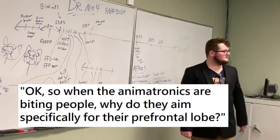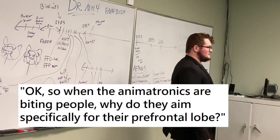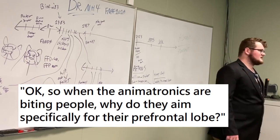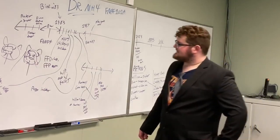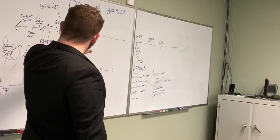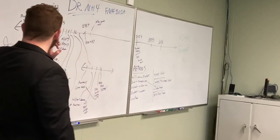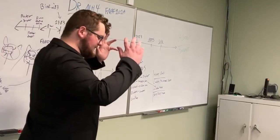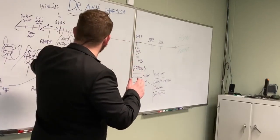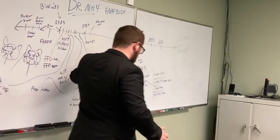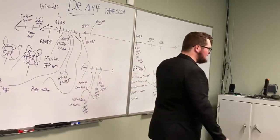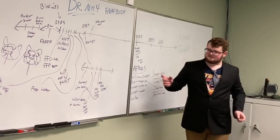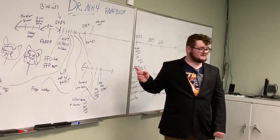Any questions? Okay, so when the animatronics are biting people, why do they aim specifically for their frontal lobe? Okay. I think that's specifically the two bite incidents. Bite of 83 was because Evan's head was specifically put in Fredbear's mouth. Bite of 87, I'm not 100% sure.